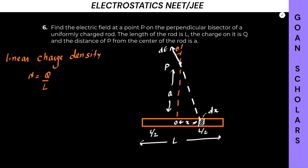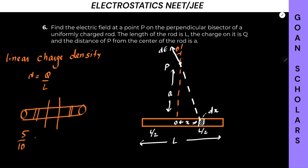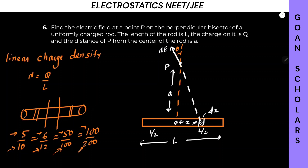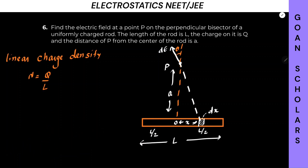So lambda is Q/L, which is fixed for the whole rod. To explain lambda: if you have a rod and different segments have charge-to-length ratios like 5/10, 6/12, 50/100, or 100/200, each gives half — the ratio of charge per unit length remains constant. Though each section has a different Q value and a different length, the overall ratio remains fixed. So lambda for this whole wire remains the same.